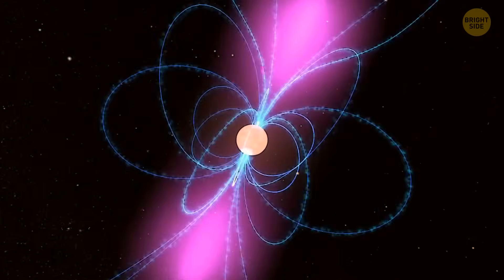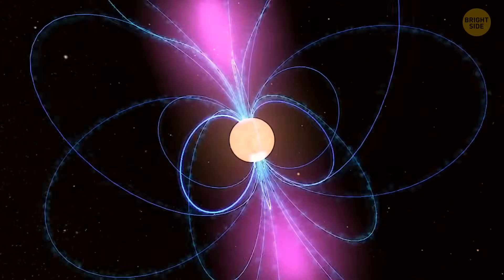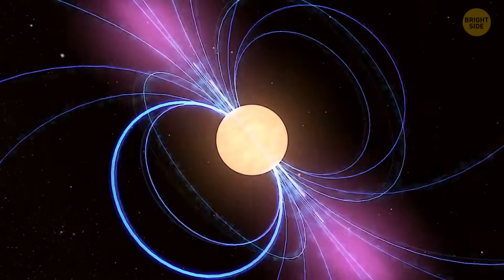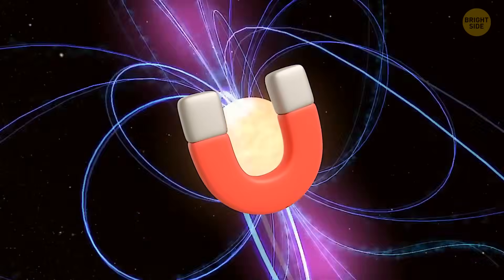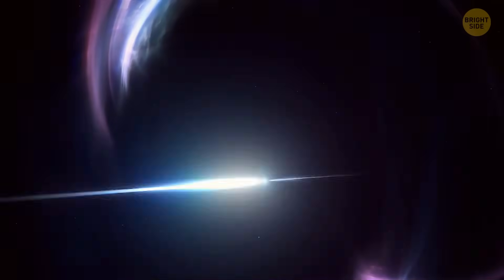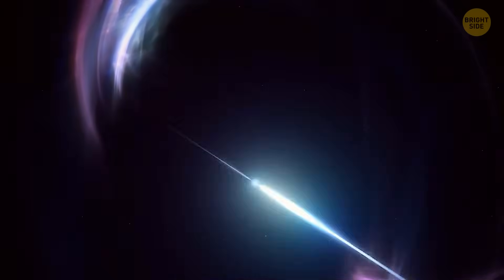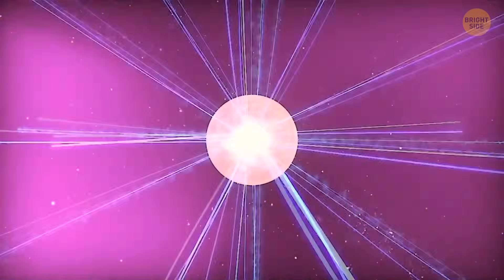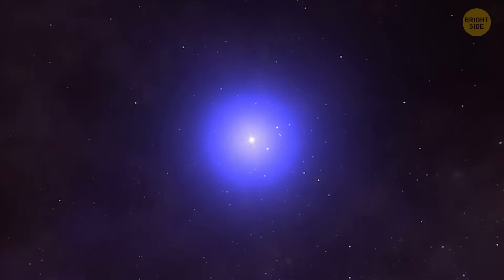These pulsars have incredibly strong magnetic fields, much stronger than what you'd find on Earth. They're like enormous magnets in space. Because of this, they shoot out beams of energy. They're also spinning superfast. So, these beams of energy seem to pulse on and off as they spin around.